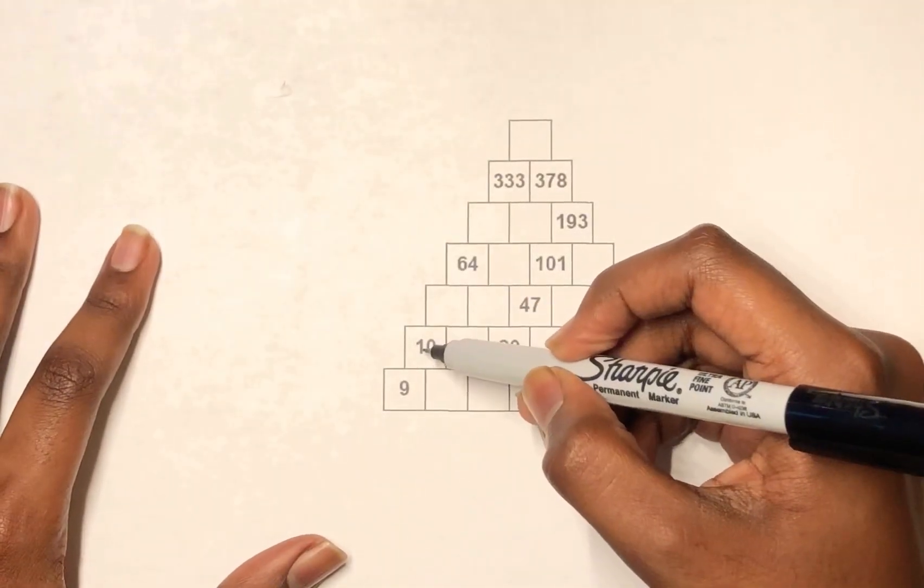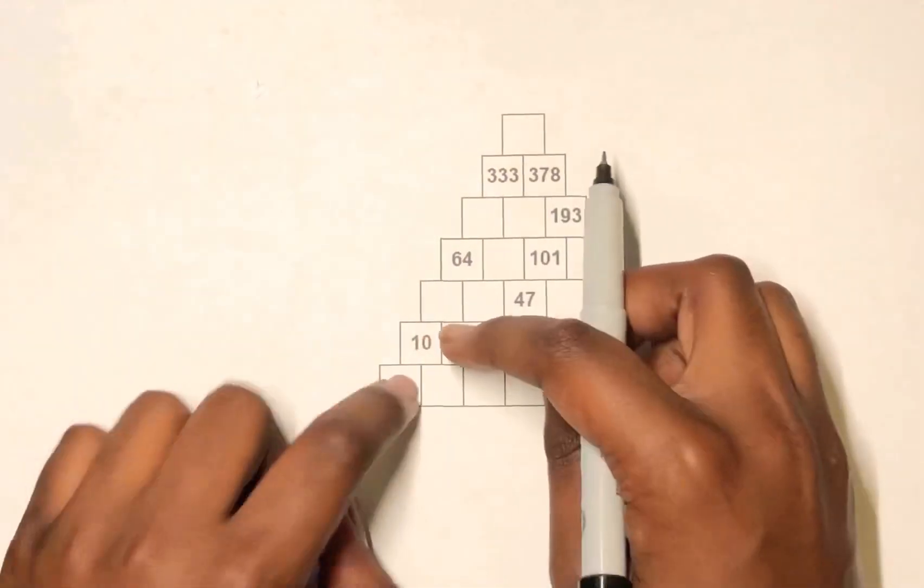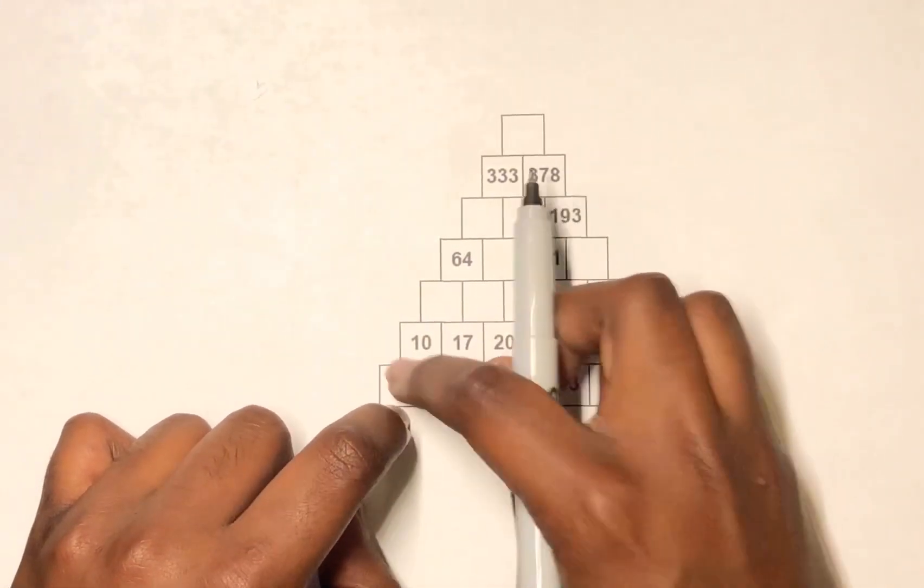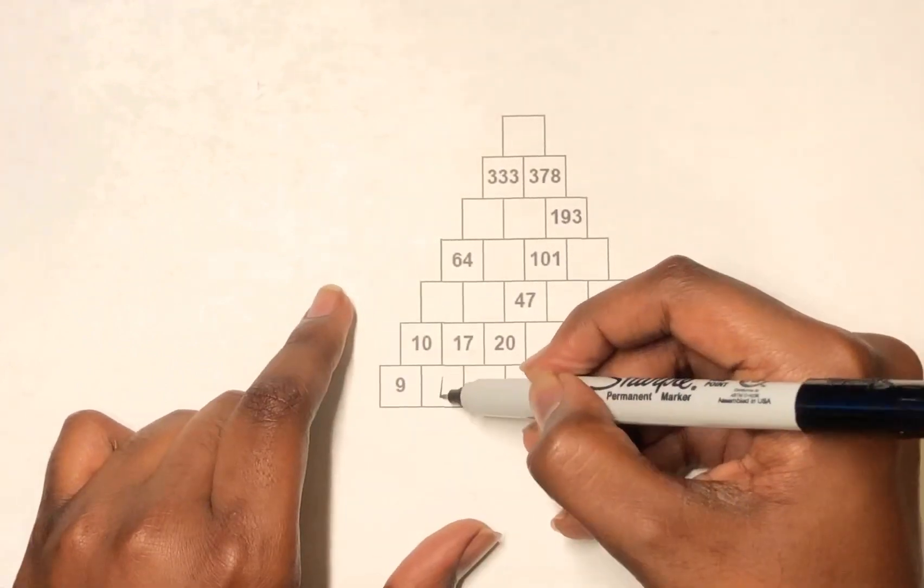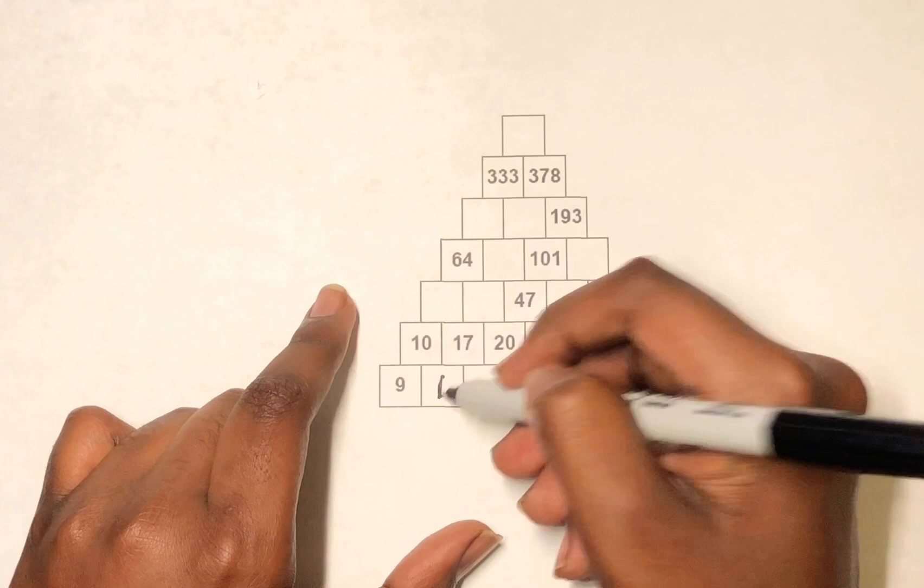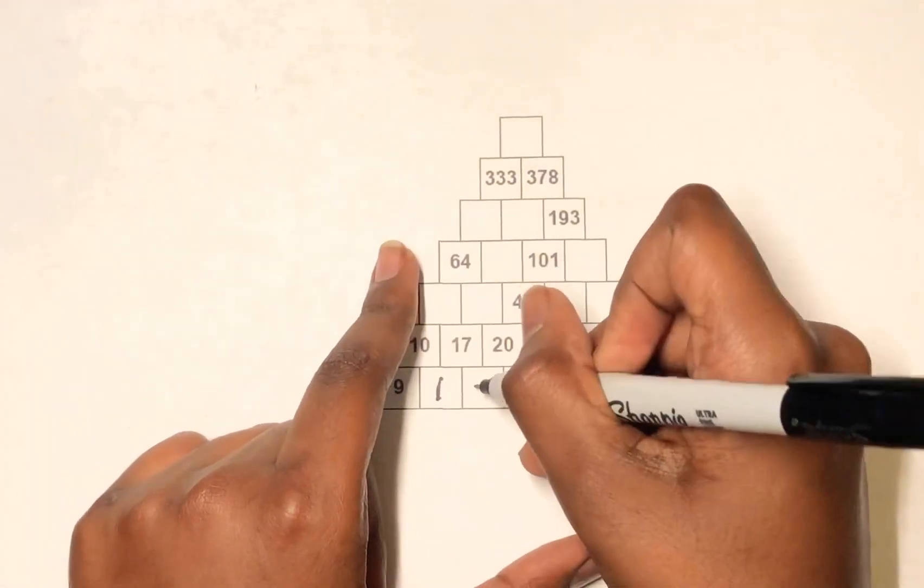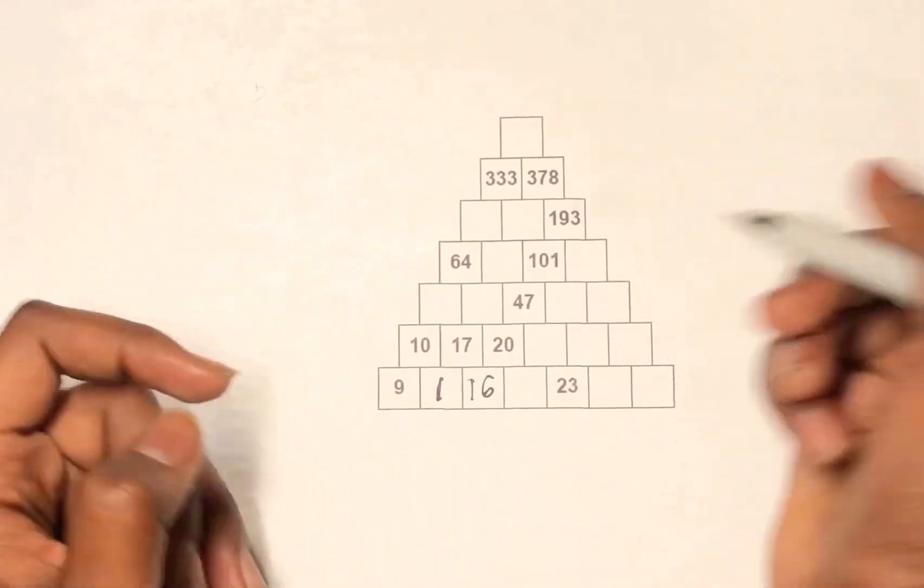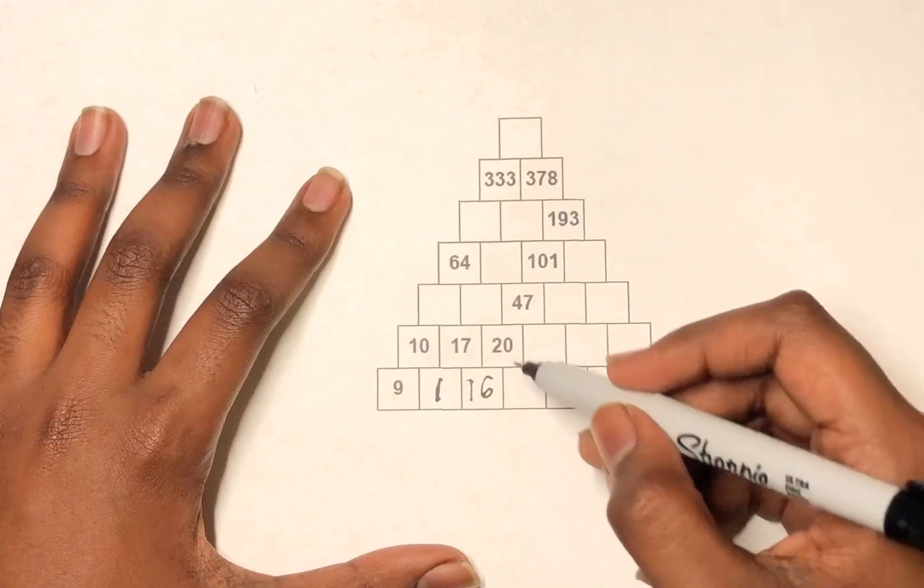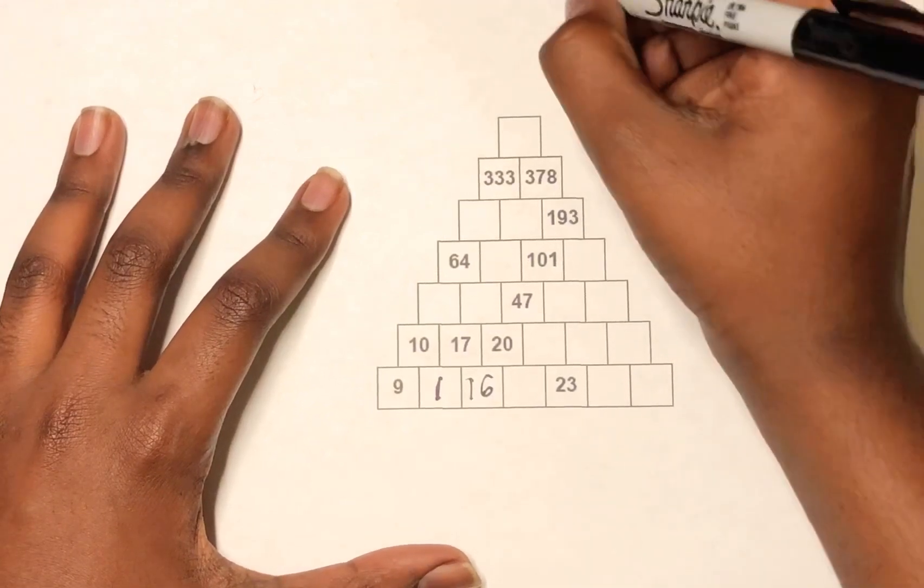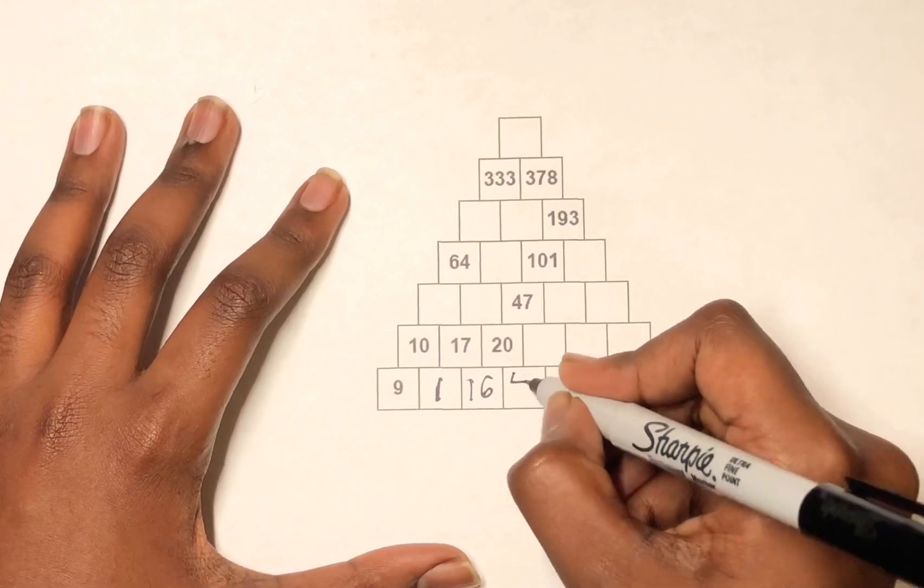So you see this number 10? You have to find two numbers that equals 10. So using this number, 9 plus 1 equals 10. Then 17, 16 plus 1 equals 17. Then 16 plus 4 equals 20. So put a 4 over here.